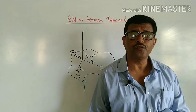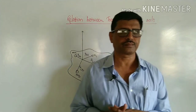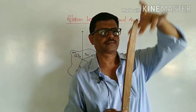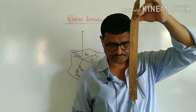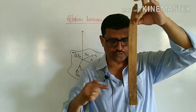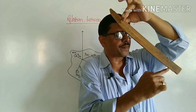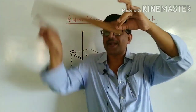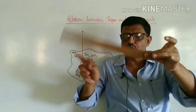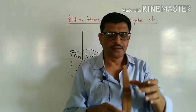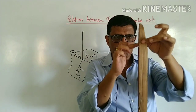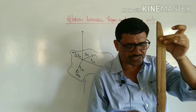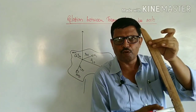Torque is the ability of a force to produce a rotation. Let us consider a rigid body fixed at some point. A perpendicular force is applied on this rigid body; because of this perpendicular force, the rigid body begins to rotate. The perpendicular distance between the axis of rotation and the line at which the force acts is the moment arm r.